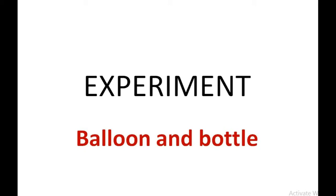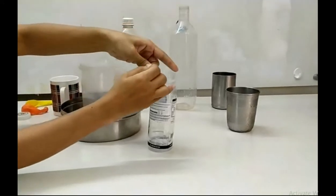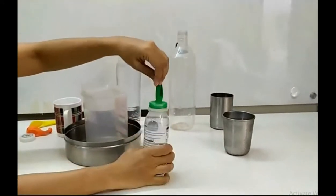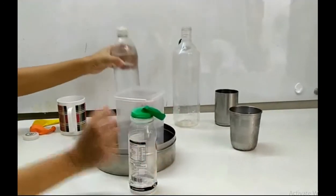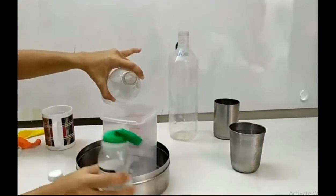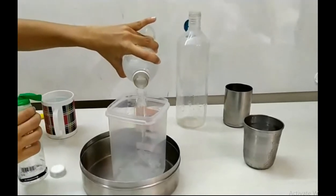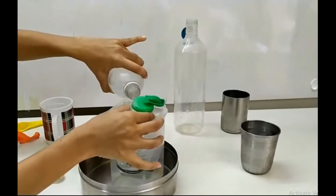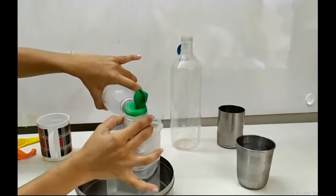Let us start the balloon and bottle experiment. I will first fix the balloon to the mouth of the bottle like this. Here I have been given a bottle of chilled water. I will pour it into this container. I can add some ice cubes also to make the water very cold, and I will keep pouring some cold water on the bottle.